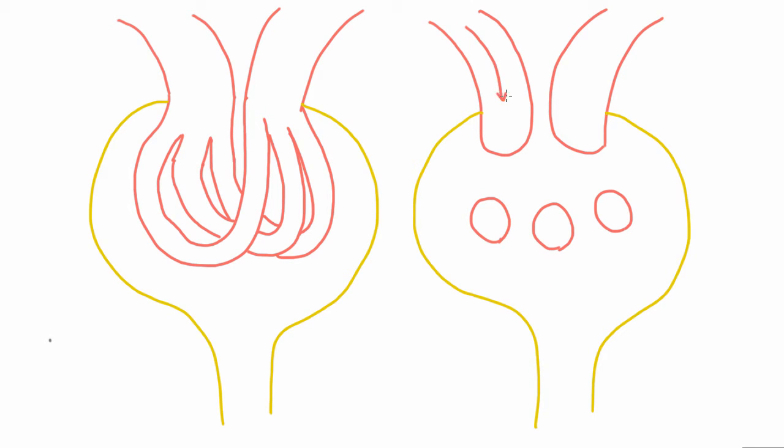So here would be your afferent arterial, and then it would be going out of the page into the page. And then here would be the capillaries coming back out of the page. And then here, the efferent arterial coming back into the page and bringing blood out of the glomerulus.